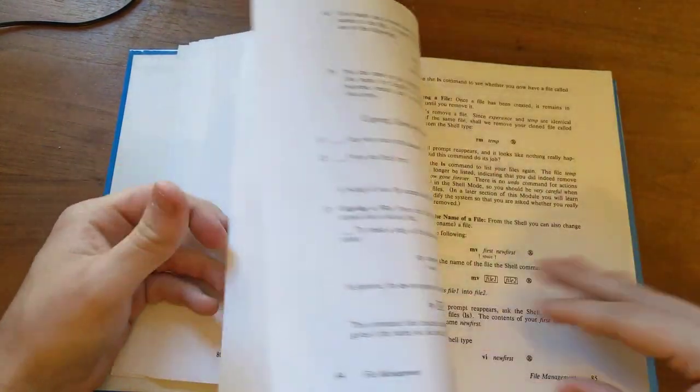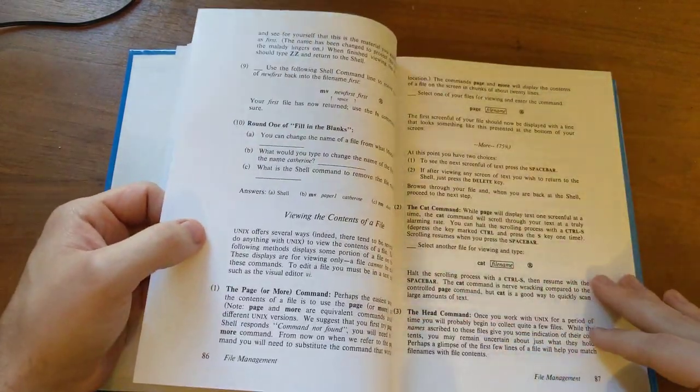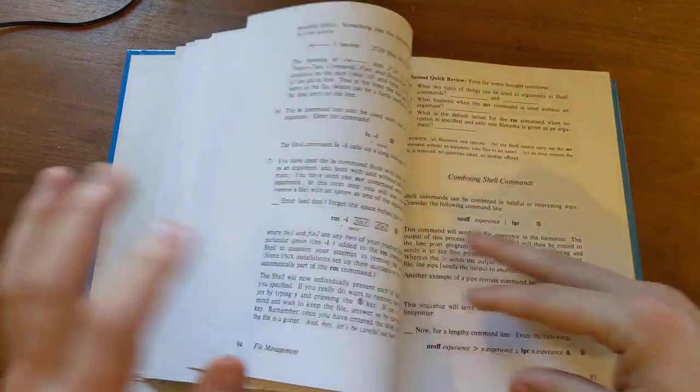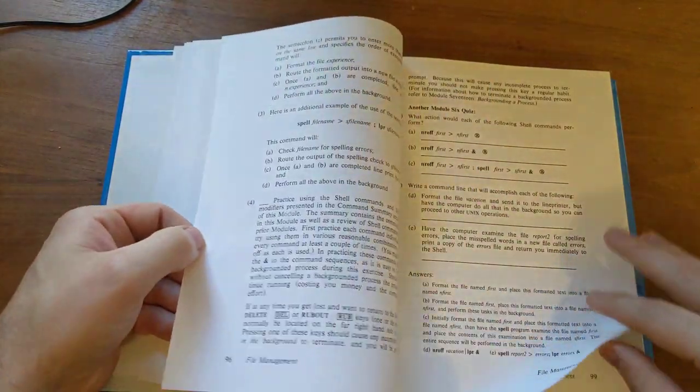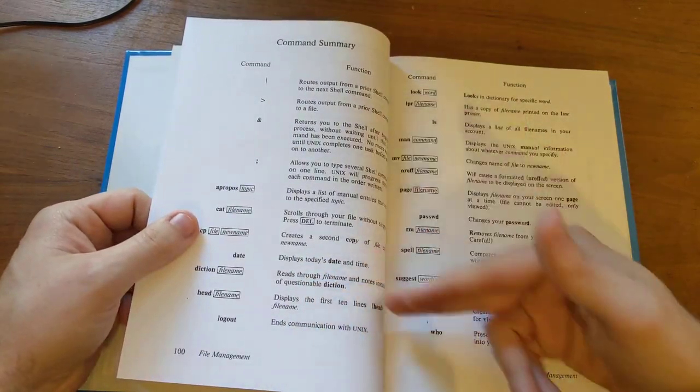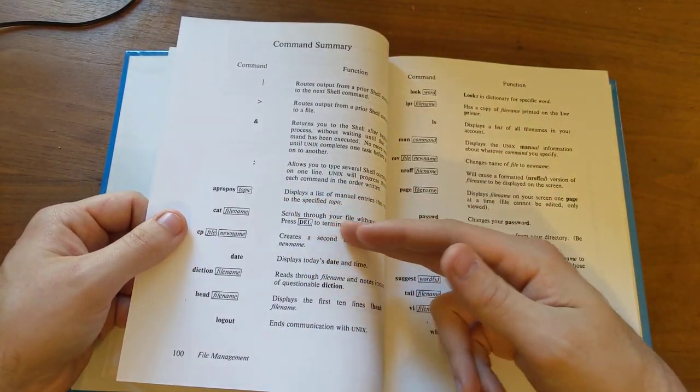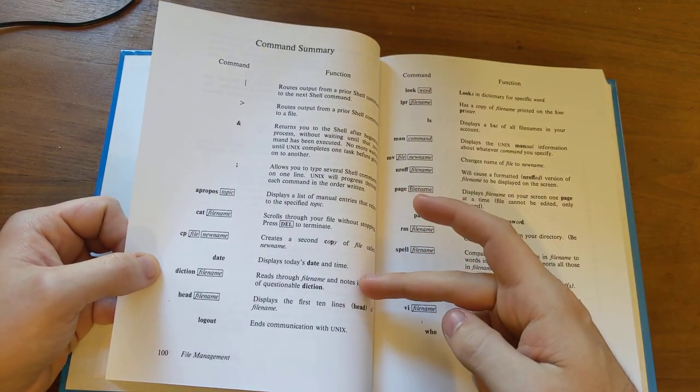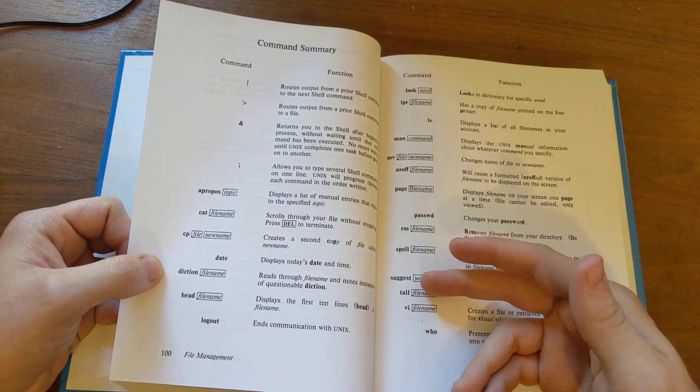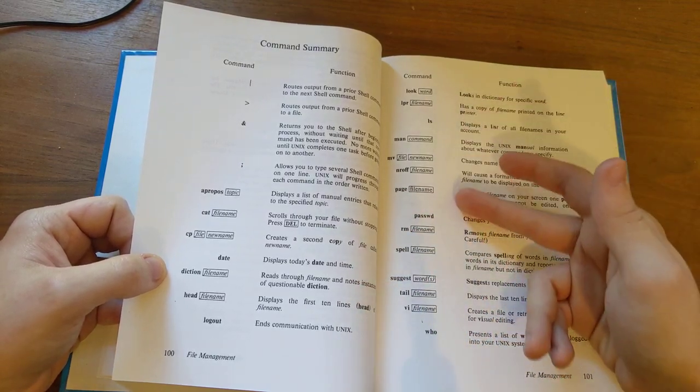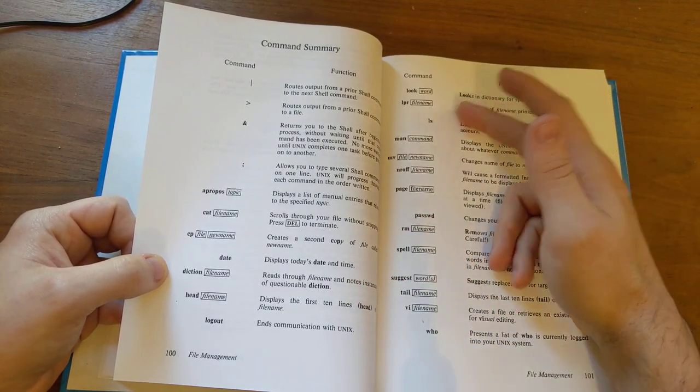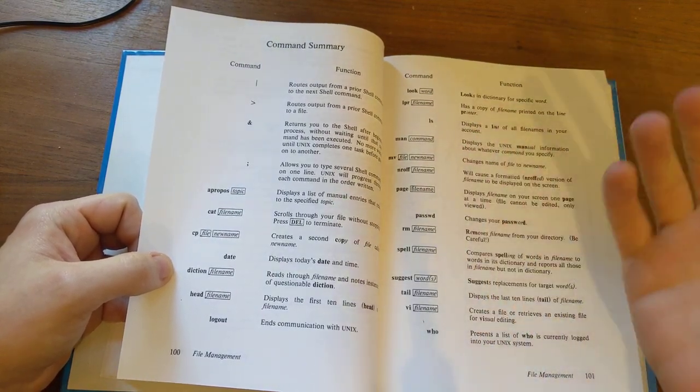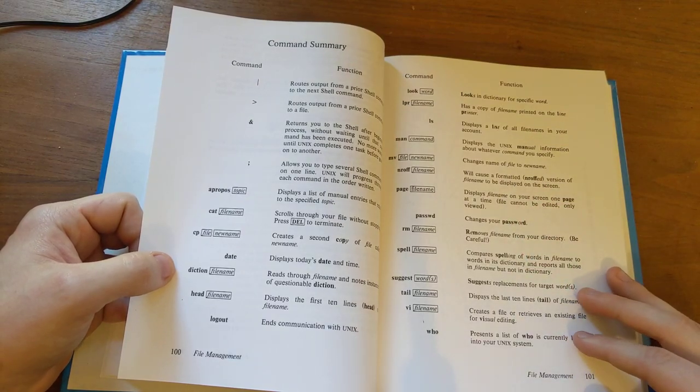So basic stuff, removing files, moving files, copying files, all this basic stuff that I think most people sort of get an inkling of, just basic stuff. And they list out all the different things, apropos, cat, diction. What is that? Reads through the file name and notes instances of a questionable diction. That's it. That's, I've never heard of that one. So, there are some of these that don't exist anymore, but like, man, LPR is still around. LPR is to print something out on your physical printer, or line printer, I guess, back in the old days, whatever.